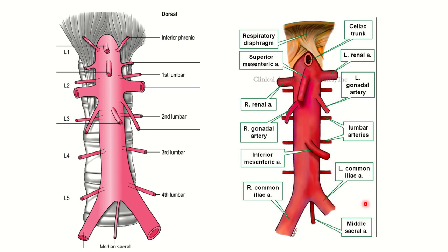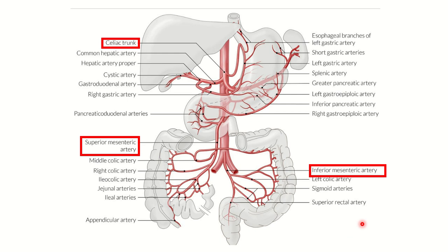The median sacral artery does not supply the abdominal viscera — this point is very important. Although it branches from the abdominal aorta, it supplies the sacral area, not the abdominal viscera. So the abdominal aorta has four unpaired branches, but among them only three supply the abdominal viscera. The nine paired branches supply other parts of the abdomen.